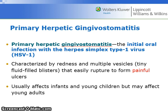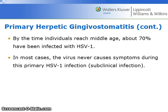Primary herpetic gingivostomatitis is the initial oral infection with herpes simplex type 1 virus. It is characterized by redness and multiple vesicles that easily rupture to form painful ulcers. It usually affects infants and young children, but may affect young adults. By the time individuals reach middle age, about 70% have been infected with HSV-1. In most cases, the virus never causes symptoms during this primary infection.